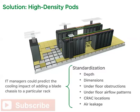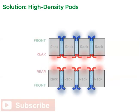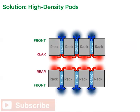If this standardization existed, IT managers would be able to predict the cooling impact of adding a blade chassis to a particular rack and make rational decisions based on the prediction. However, these raised floor attributes by their very nature are customized and are not conducive to standardization. Furthermore, the variability of all these attributes would make real-time computational fluid dynamics modeling nearly impossible in a typical data center. In contrast, high-density pods use standardized hot and cold aisle widths, rack height, and air path distances to the rack. Row-based cooling also eliminates the variability introduced by the raised floor, making it possible to design predictable high-density pods using standardized tools.